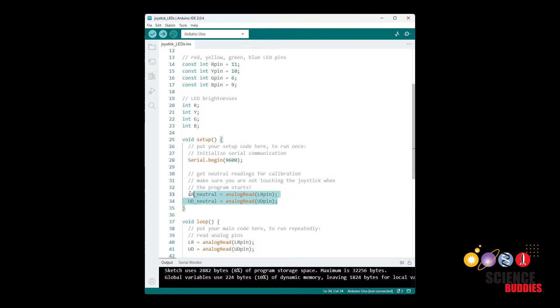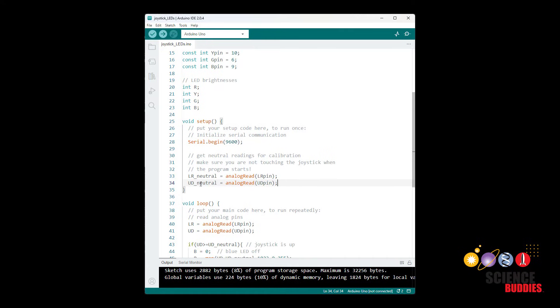In my setup function I am now taking those neutral readings. So this will work assuming you are not touching the joystick right when the program starts. Here I am just taking one reading and setting that to my neutral but for example if you think there's going to be a little bit of noise you could take 10 readings in a row and average them to get your neutral value but I'm keeping this simple for now.